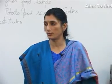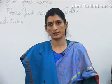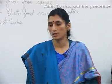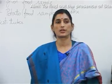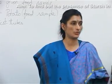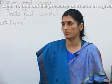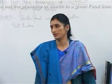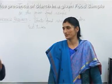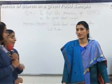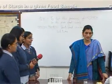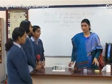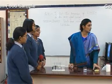We have done one form of carbohydrate, that is sugar. Now, can you tell me what is the next form or the second form of carbohydrate? Okay, Ritika. Starch. Okay, starch. And these are the commonly eaten food items.